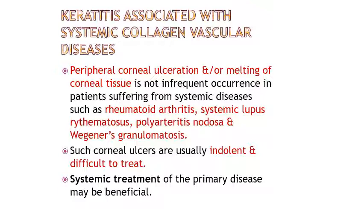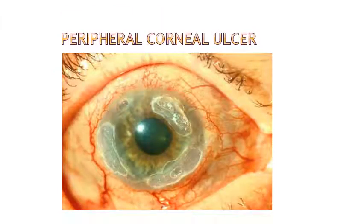First, coming to peripheral corneal ulcers associated with connective tissue disorders. These ulcers are mainly associated with conditions like rheumatoid arthritis, systemic lupus erythematosus, polyarteritis nodosa, or Wegener's granulomatosis. They may start unilaterally and later involve both eyes. Multiple ulcers appear in the periphery with inflammation adjacent to the limbus, slowly progressing to form a gutter-like thinning of the entire peripheral cornea.